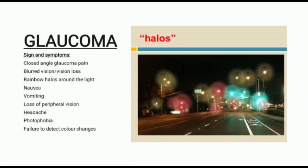Next are the signs and symptoms of Glaucoma. In close angle glaucoma: pain, blurred vision or vision loss — if not treated, the last stage can result in complete vision loss — rainbow halos around lights, nausea, vomiting, loss of peripheral vision, headache, photophobia, and failure to detect color changes.